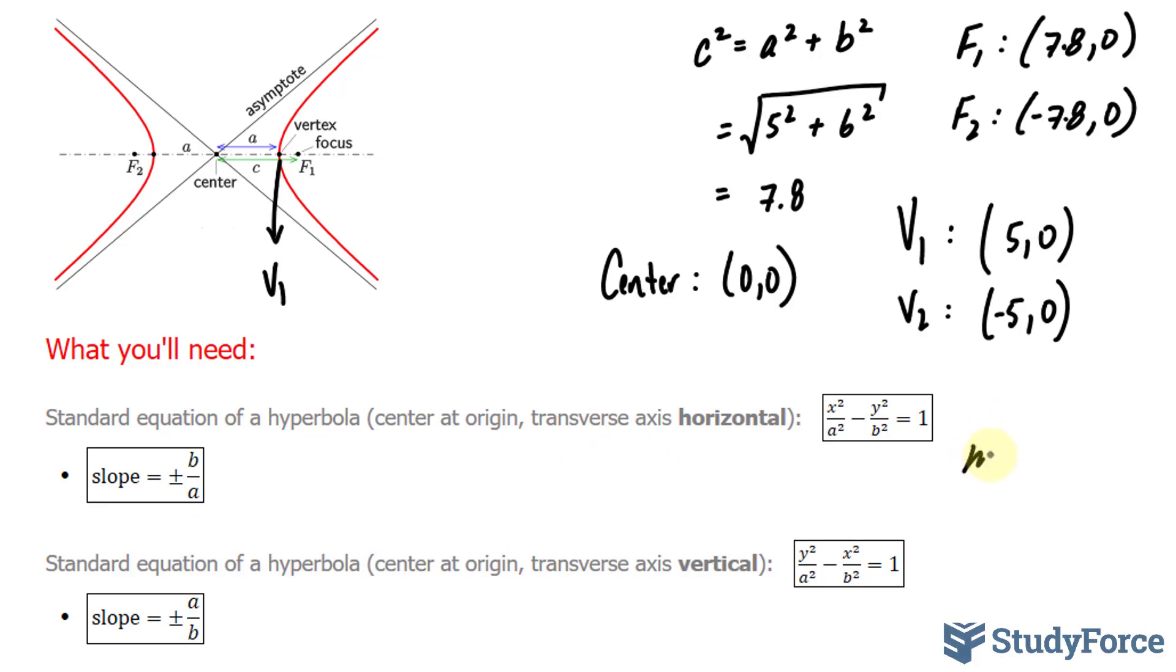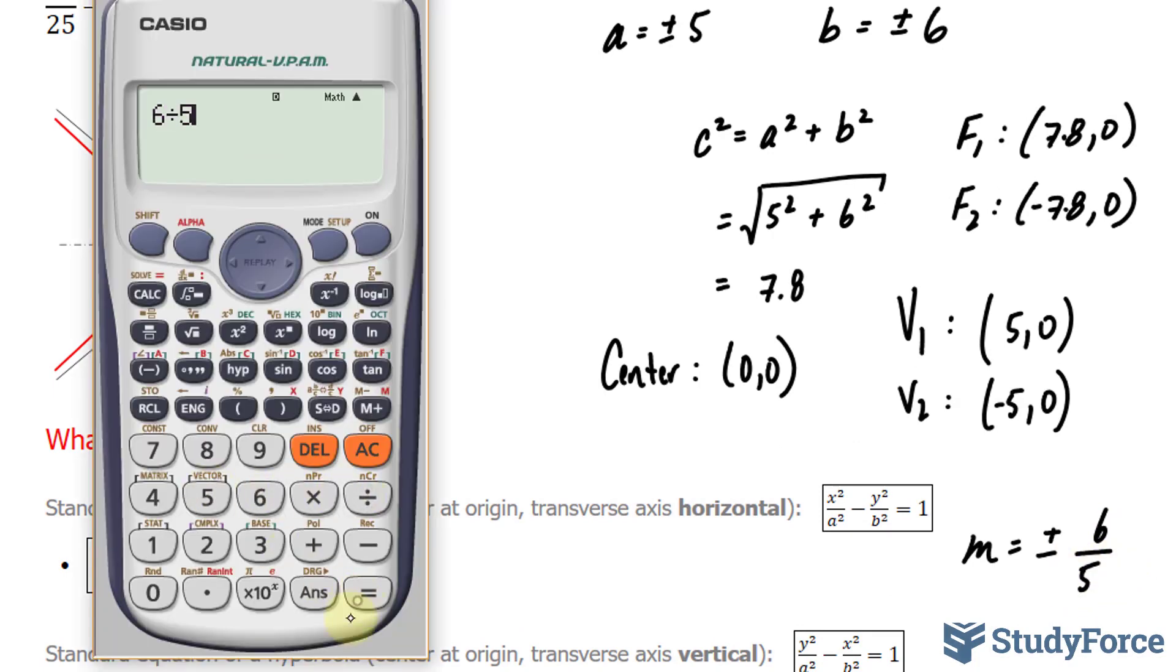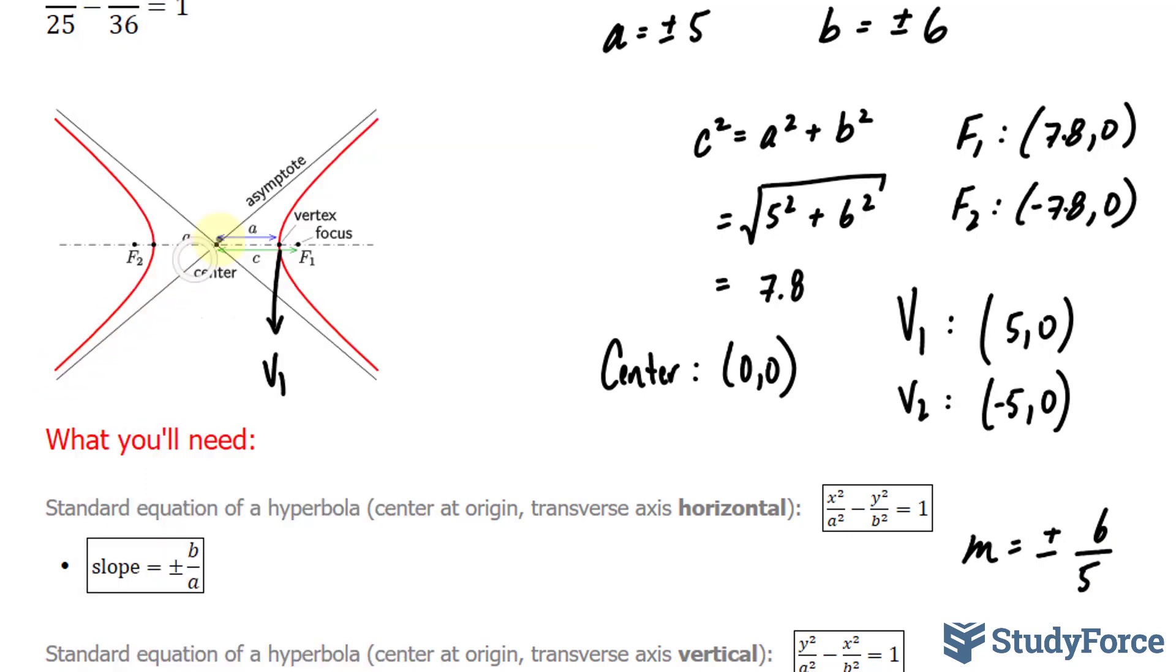That being said, the slope will be plus minus, and it's represented by the letter m, where b is equal to 6, a is equal to 5, therefore the slope is roughly plus minus 1.2. So this will be m is equal to 6 over 5, and this will be m is equal to negative 6 over 5.